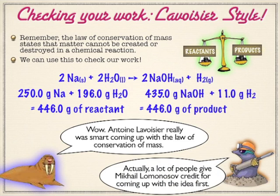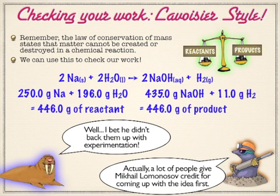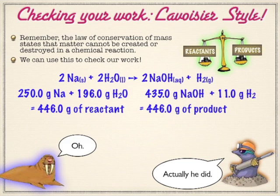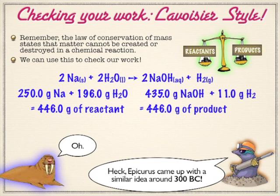Anton Lavoisier gets a lot of credit for the law of conservation of mass, but Lomonosov also gets a lot of credit — he came up with the idea first technically. Or you can go all the way back to Epicurus, who came up with a similar idea, running with Democritus and those guys in terms of the early concept of atoms. The law of conservation of mass has been around in a lot of ways, but Lomonosov and Lavoisier really brought in the experimentation to set us up with the modern view of it.